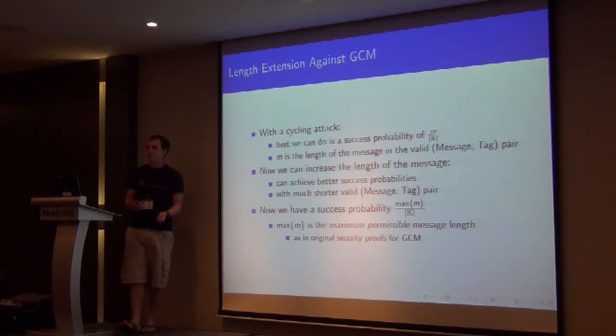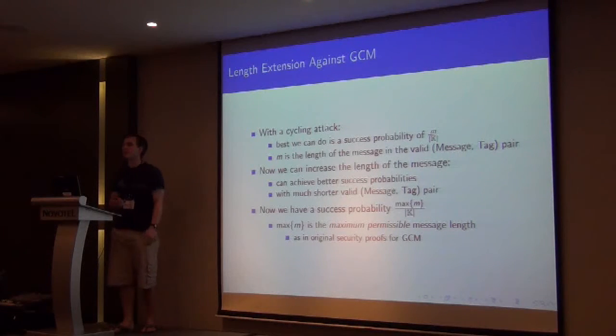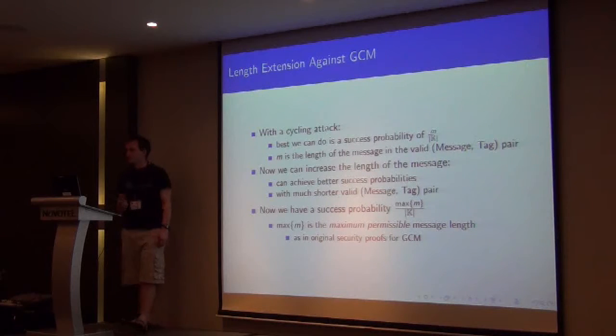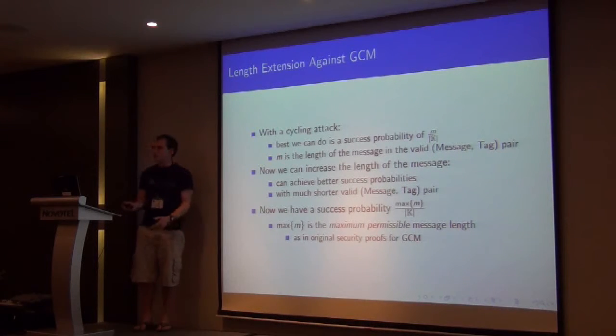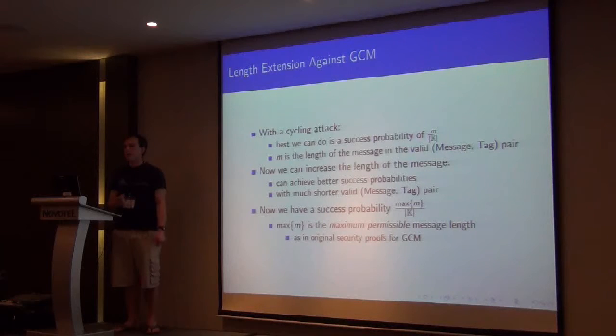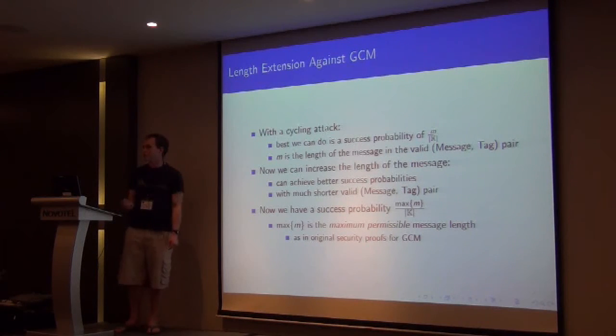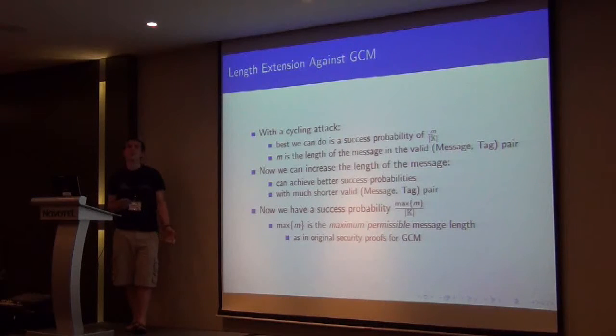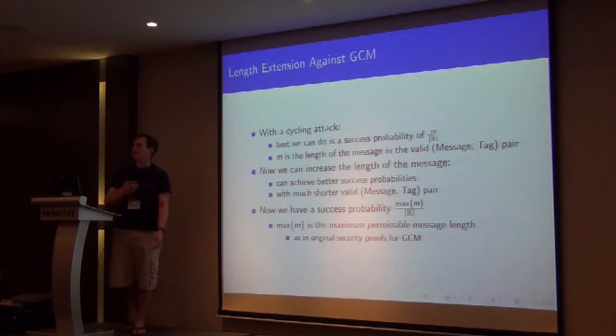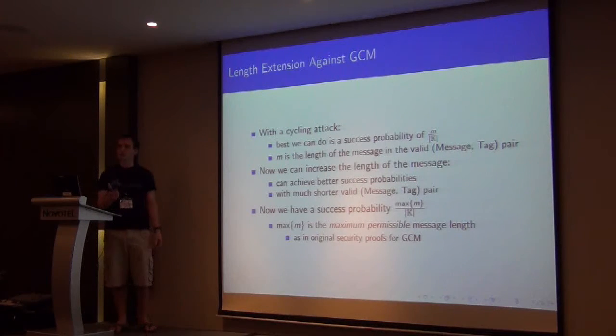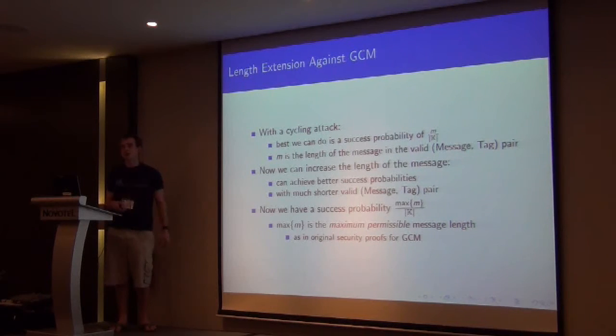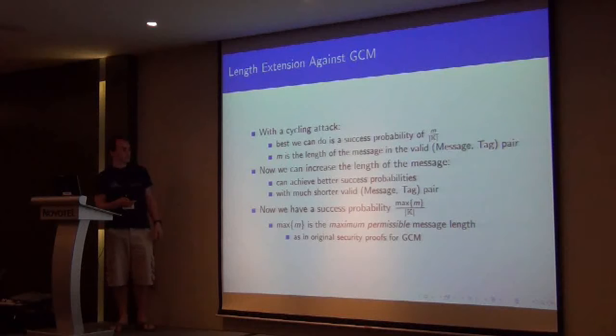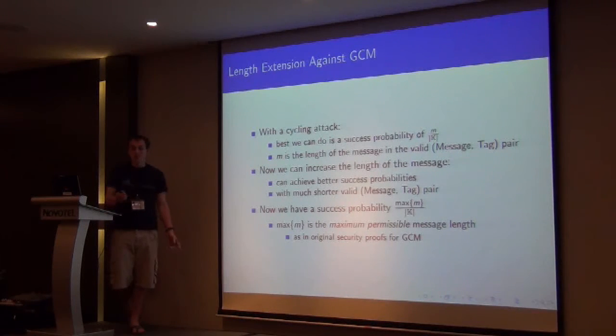So why is this a good thing? Well, with a cycling attack, the best you can do is to have a forgery probability of m over the size of the field. And here m's the length of the message that you're given at the beginning. The message in the valid tuple. So with this, we can increase the length of the message, and get a better success probability with a much shorter valid attack. So if you imagine having a field with subgroups of size three and five, if you've got a four block message, you can't use the subgroup of order five, you can only use the subgroup of order three. So you've kind of wasted one of the message blocks that you did have.